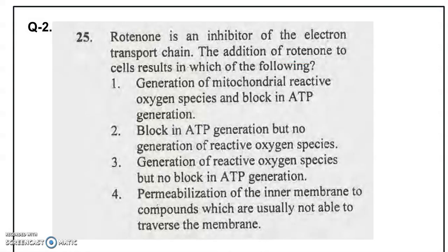Question number two: rotenone is an inhibitor of the electron transport chain. The addition of rotenone to the cells results in which of the following? Rotenone is actually a plant product which inhibits complex one of the electron transport chain. In the electron transport chain, there are four complexes. Complex one is known as NADH dehydrogenase complex. Complex two is known as succinate dehydrogenase complex. Complex three is known as cytochrome b-c1 complex.